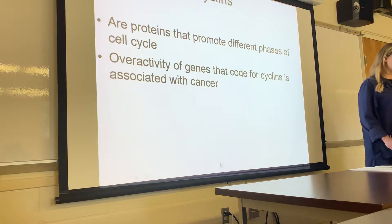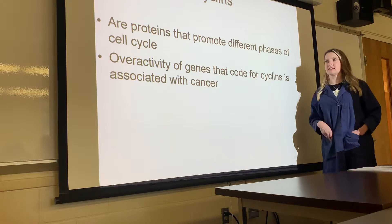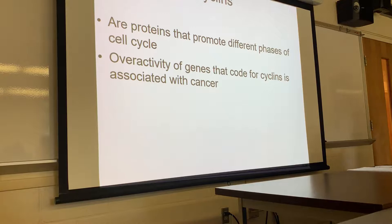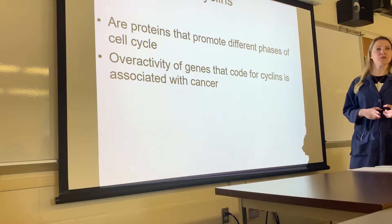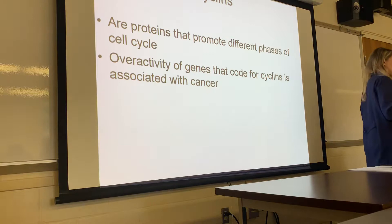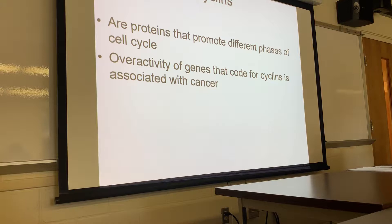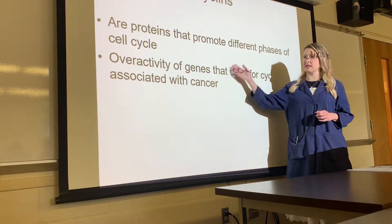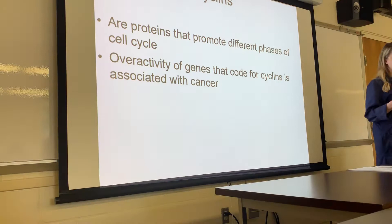Cyclins are another type of protein that promotes different phases in the cell cycle. If cyclin genes are overactive, this can also cause cancers because it drives cell division to continue when it's not necessary. Tumor cells don't know any boundaries — they grow on top of each other, which is not normal. In the digestive tract, for example, cells have negative charges that keep them separated and prevent growth on top of each other, but overactive cyclins cause unchecked proliferation.